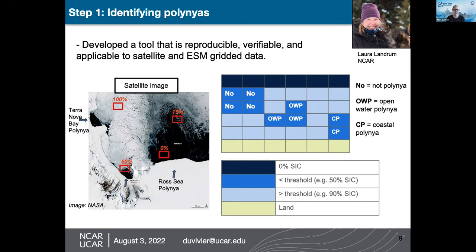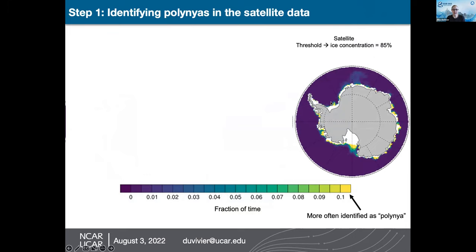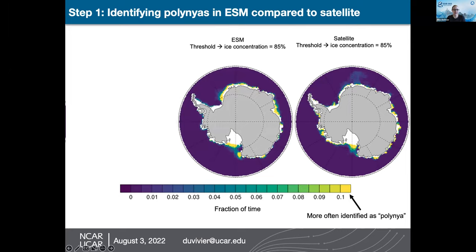We've used this algorithm to identify polynias around the Antarctic coast. Areas shown in yellow are more often identified as a polynia, and you can see hotspots emerge: the Ross Sea, Prydz Bay, the Amundsen and Bellingshausen Seas — regions where polynias are known to occur. Comparing with the Earth system model, it looks somewhat different — we lose the polynias in the Bellingshausen/Amundsen Sea.